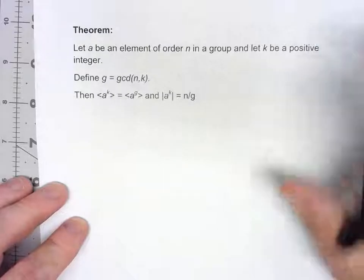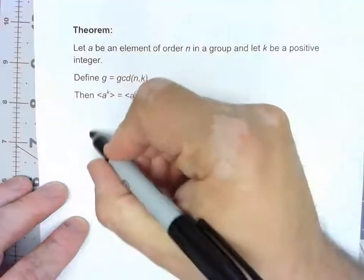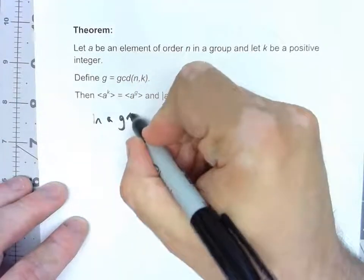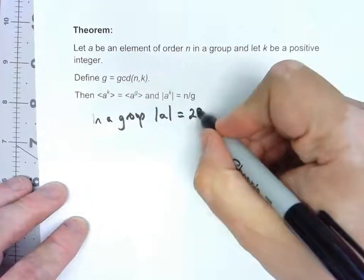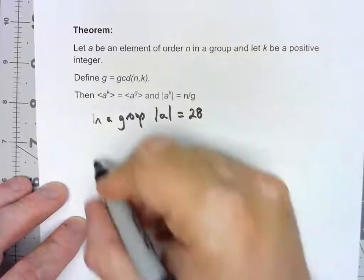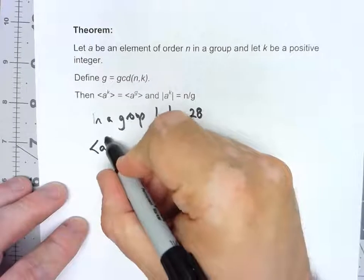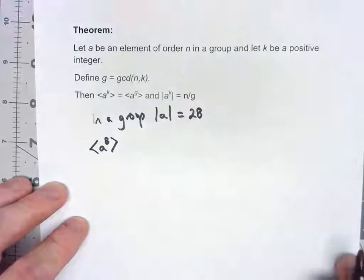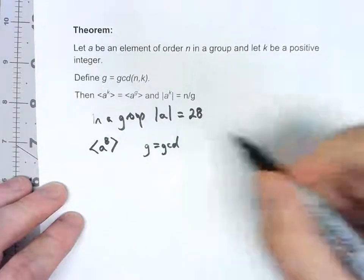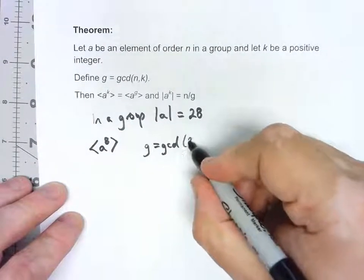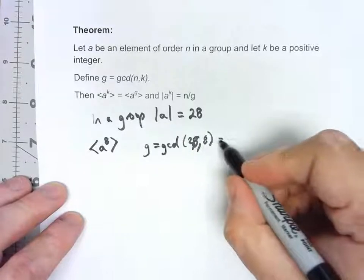Now that seems far more abstract than what it really is. Let's say in a group there's an element a and the order of a is 28. Let's consider the subgroup generated by a^8. What this says we can do is calculate the GCD of that order 28 and 8, which is 4.